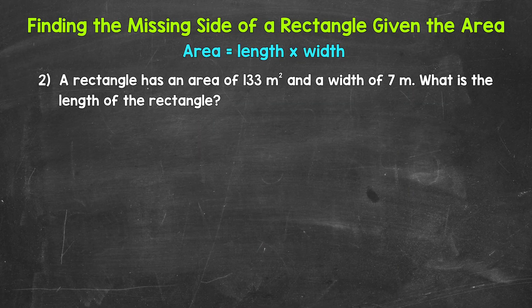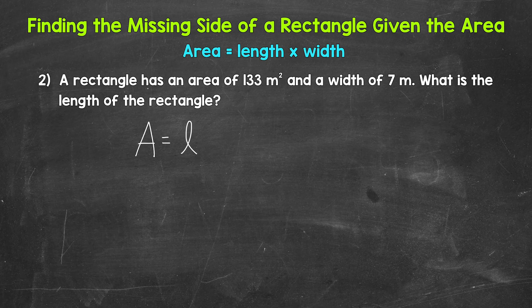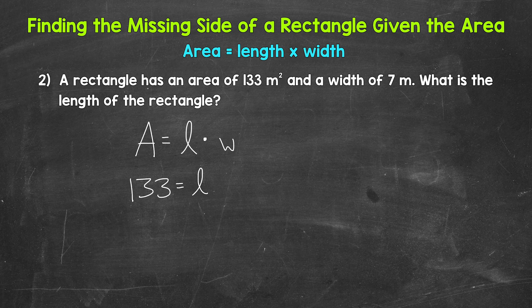Let's move on to number two. A rectangle has an area of 133 square meters and a width of seven meters. What is the length of the rectangle? Let's start by writing out our formula: area equals length times width. We know the area is 133 square meters, so plug in 133 for the area. We don't know the length — that's our unknown — so keep L there. Times the width, which is seven meters, so plug in seven. Now we have 133 equals the length times seven. What times seven gives us an area of 133? We're going to need to solve this one-step equation.